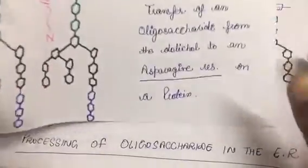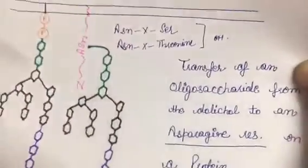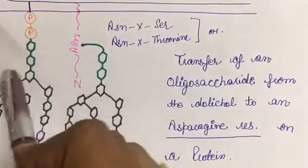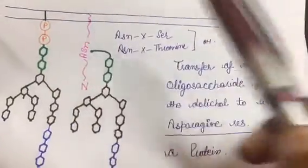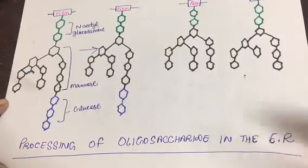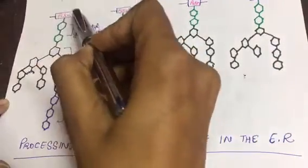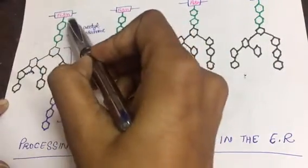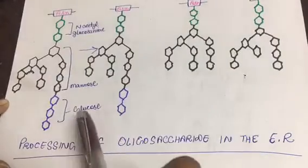Oligosaccharide transferase is helping in the transfer of this oligosaccharide from this dolichol phosphate to asparagine. Then later on, here asparagine, N-acetylglucosamine, mannose residues and glucose.